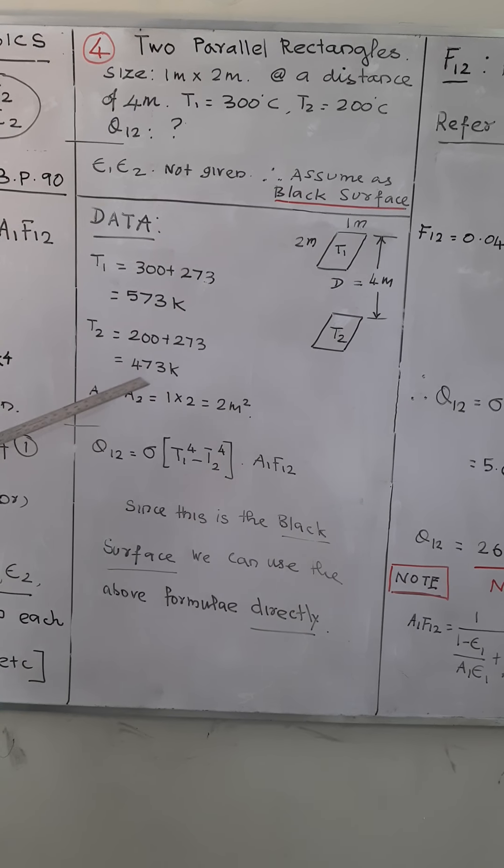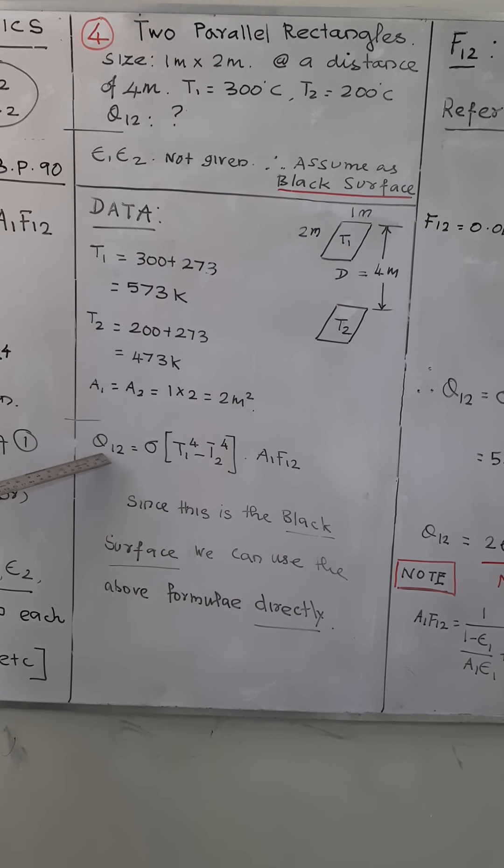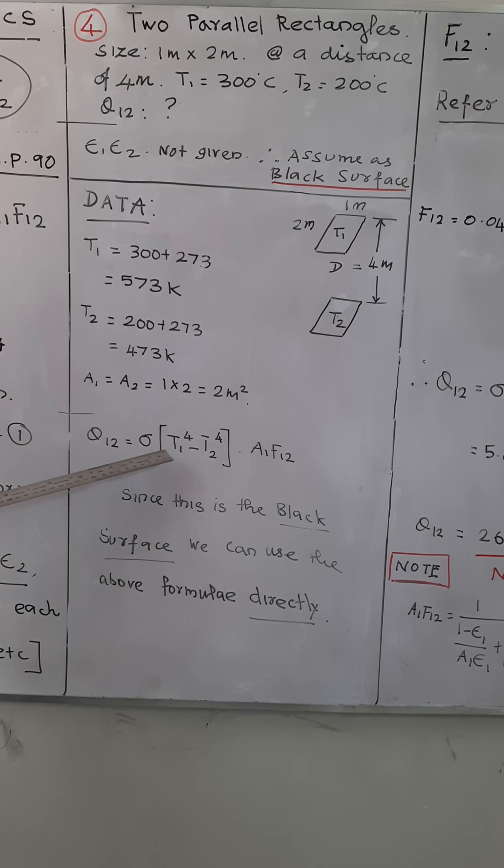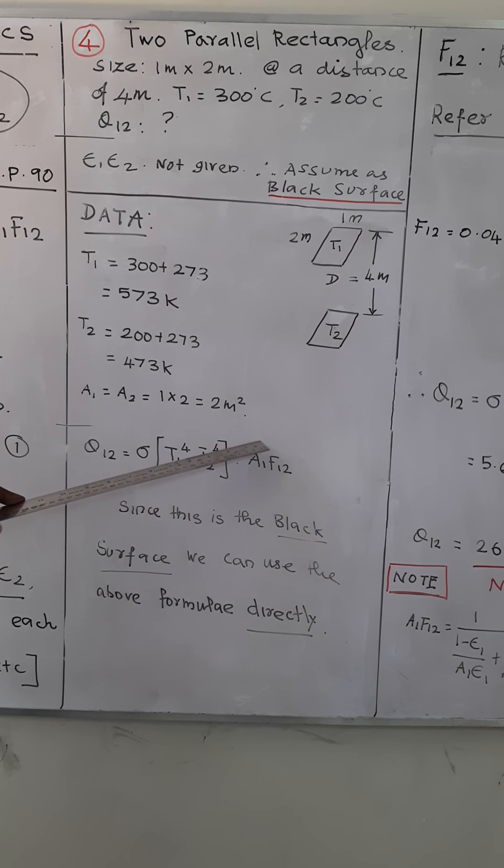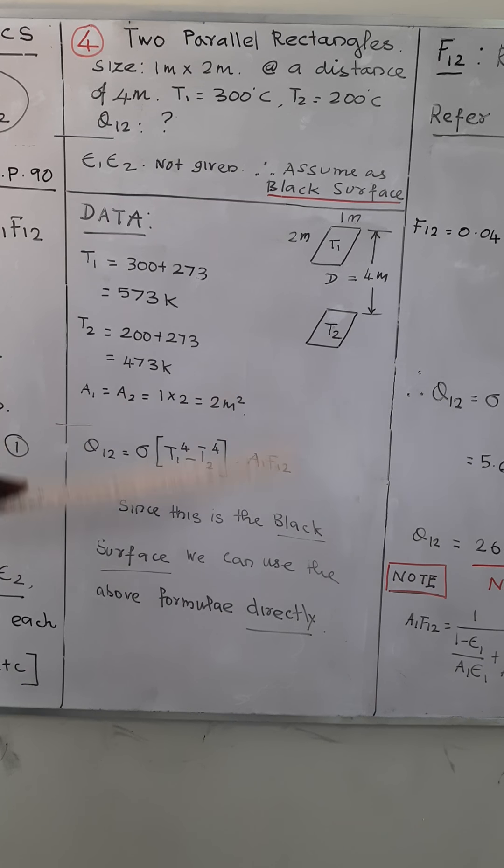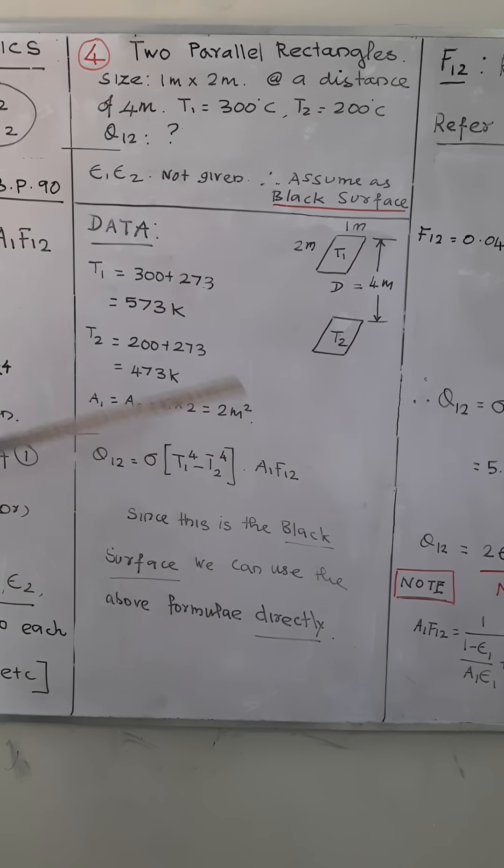Q₁₂ = σ(T₁⁴ - T₂⁴)A₁F₁₂. Straightaway you can use the formula, no need to go for a revised value. I will explain it later. Right, let's begin.